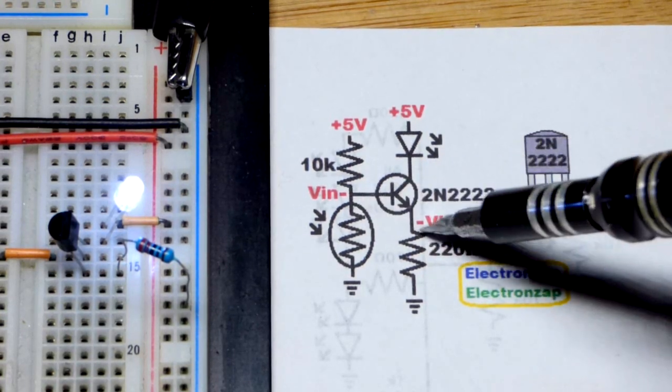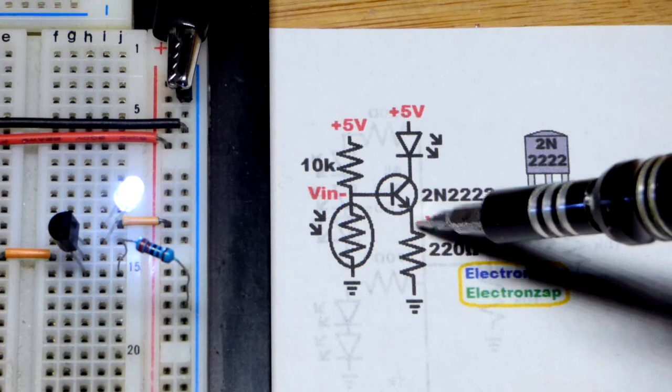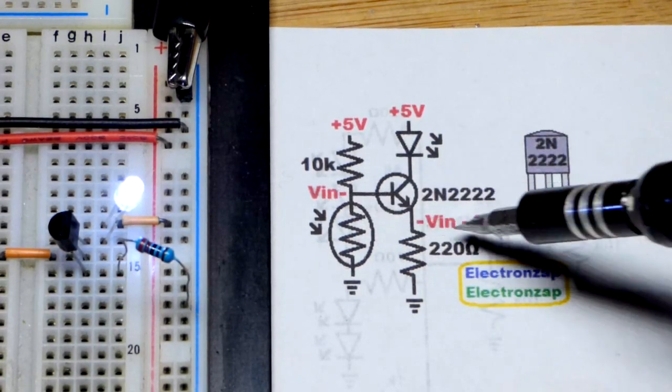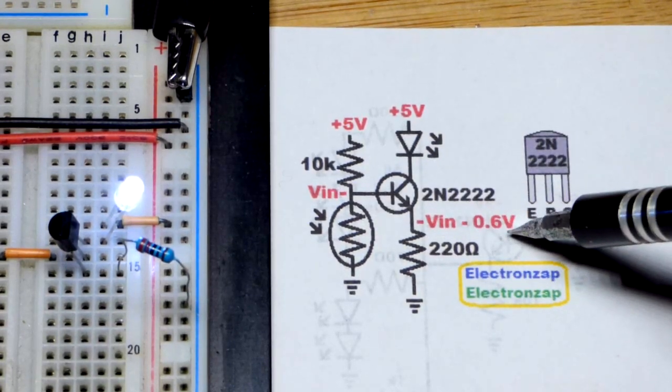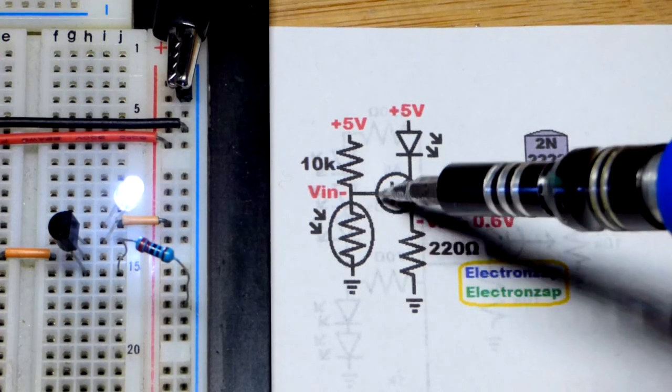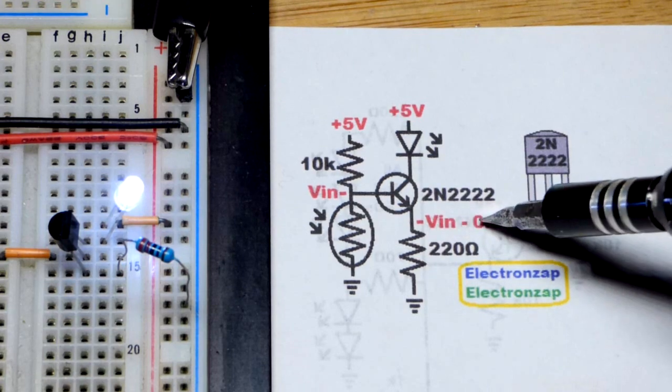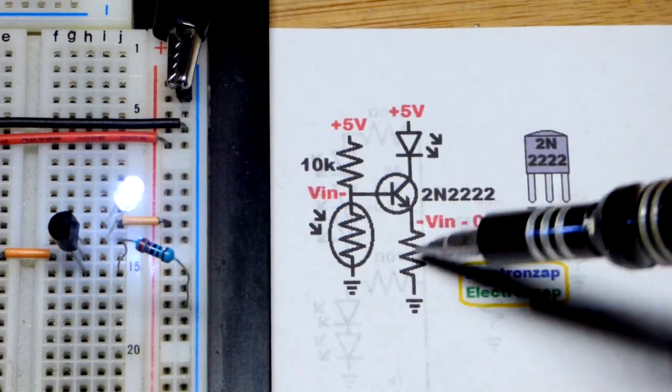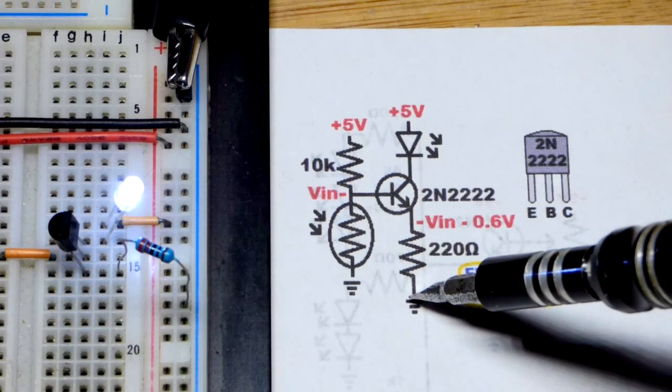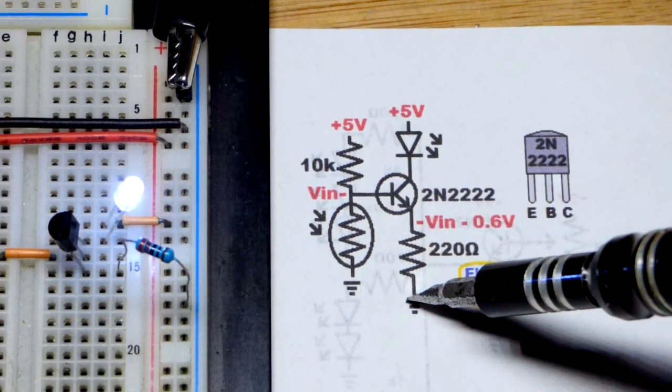That changes the voltage at the emitter, which is the same voltage as the base but subtract about 0.6 volts approximately, because there is a diode drop there. So we have a voltage drop there compared to the base. But in any case, that sets the voltage across this resistor here, which sets the current because of Ohm's law.